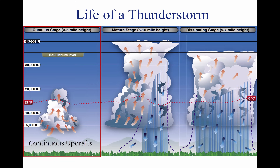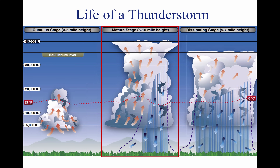Continuous, strong updrafts prohibit moisture from falling. The updraft region grows larger than the individual thermals feeding the storm. Within approximately 15 minutes, the thunderstorm reaches the mature stage.